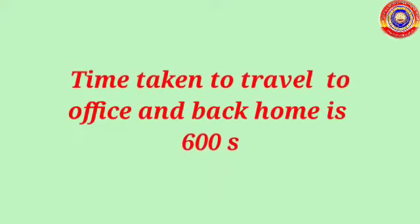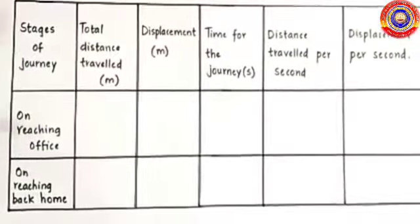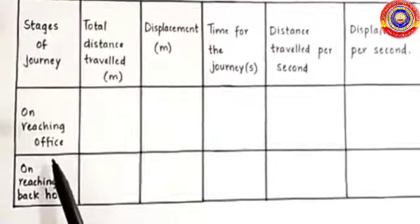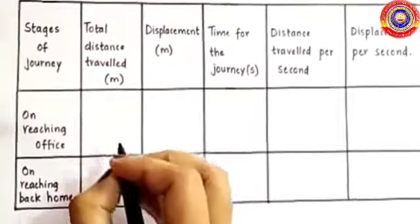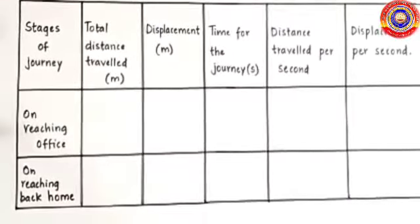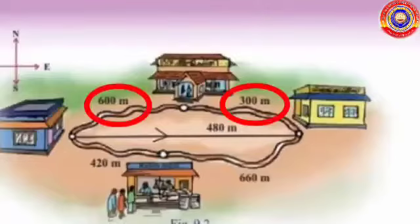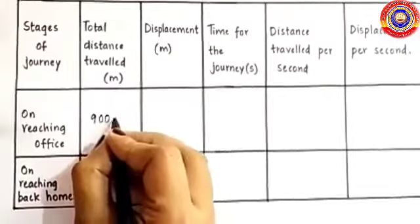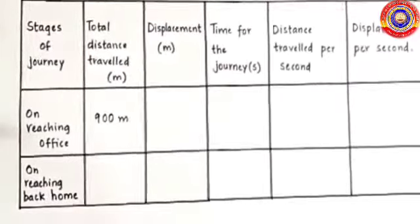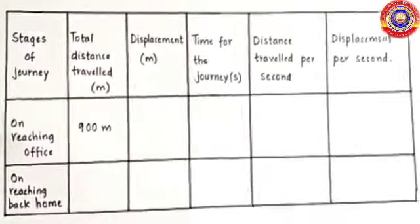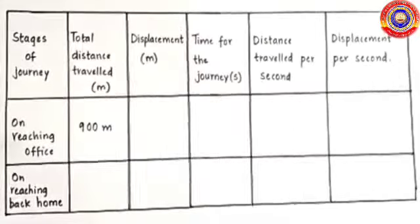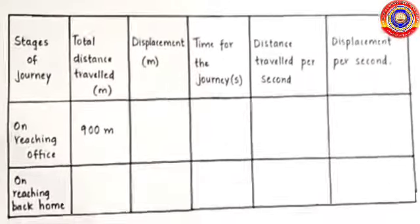One more point to add: suppose the time taken to travel to the office and back home is 600 seconds. On reaching the office, the total distance travelled — look at this figure — is 900 metres. So 900 metres is the total distance travelled on reaching the office.